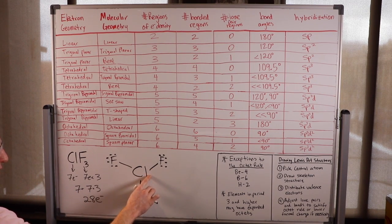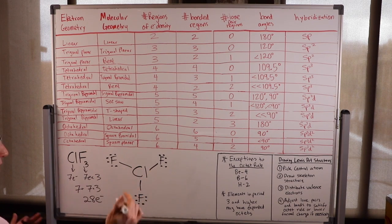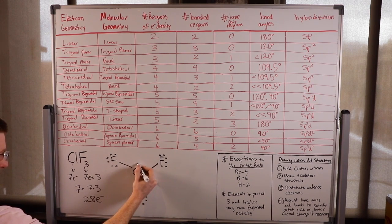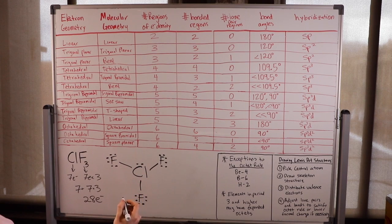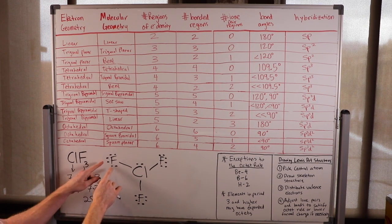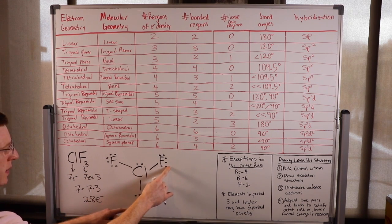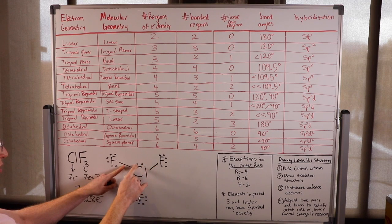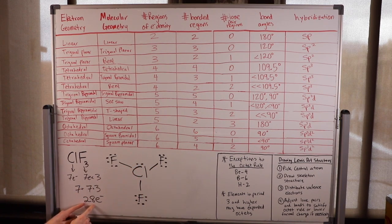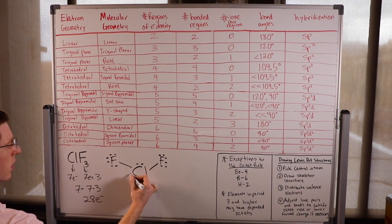Does chlorine have a satisfied octet? The fluorines are checked. The central chlorine only has six electrons and wants eight. So we put more electrons on the chlorine. We've only used 26 electrons now, so we have two more electrons to use, and the only place they can go is on the central chlorine.